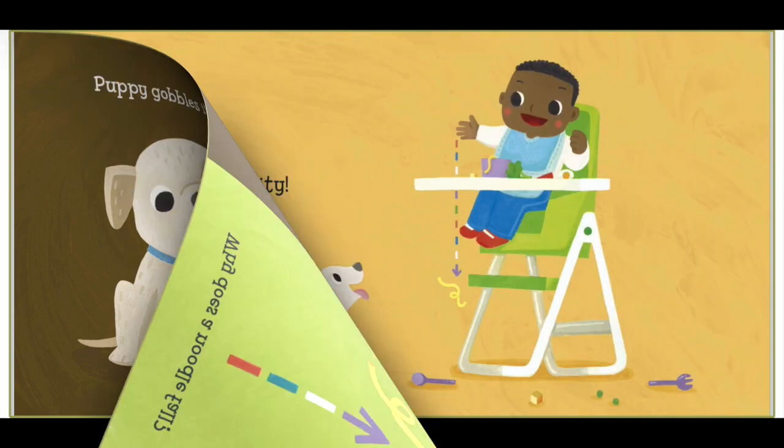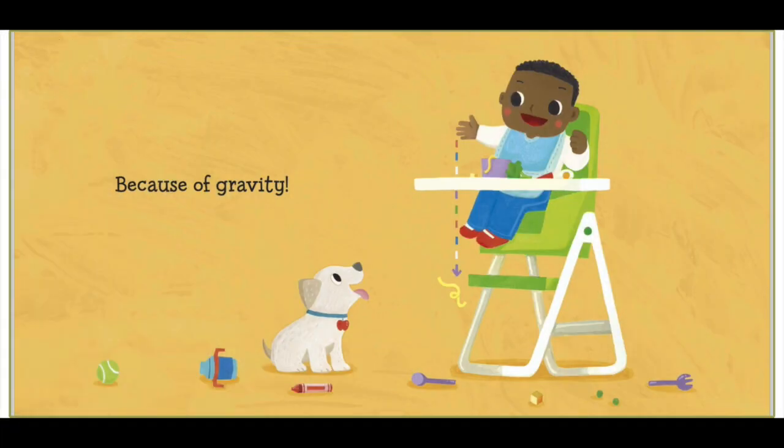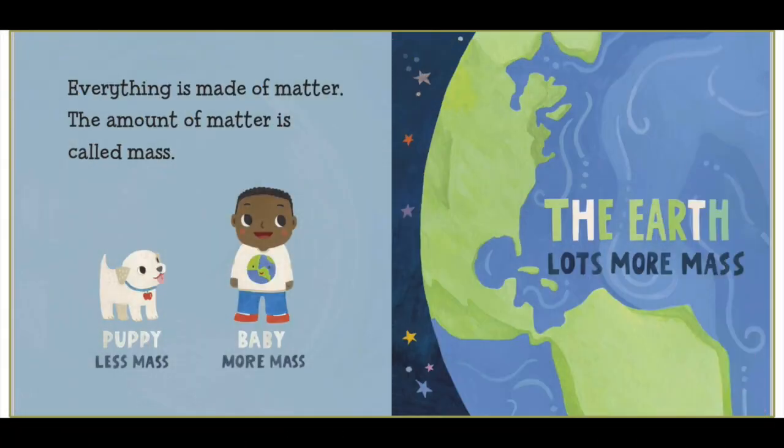Because of gravity. Everything is made of matter. The amount of matter is called mass. Puppy: less mass. Baby: more mass.